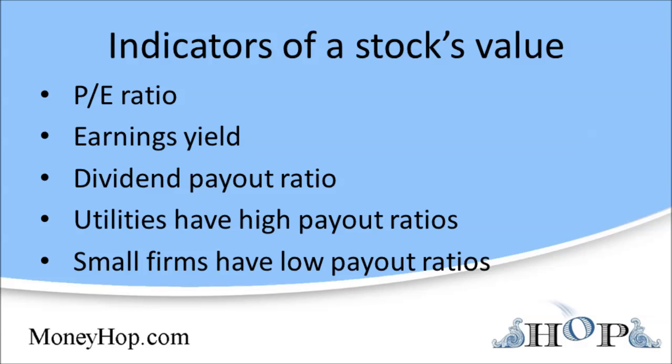The price to earnings ratio for a stock is a good indication of the relative attractiveness of the stock. A price to earnings ratio of 10 means that investors are willing to spend $10 to buy $1 worth of earnings generated by the stock. In comparison, a stock with a price to earnings ratio of 20 means that investors are willing to pay twice as much for the same $1 of earnings.